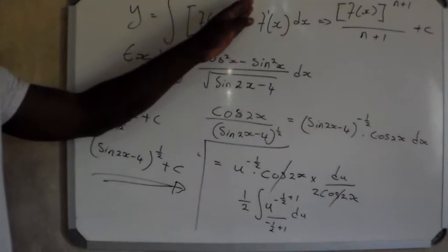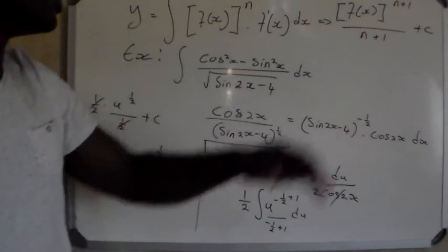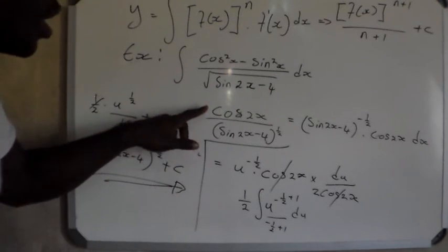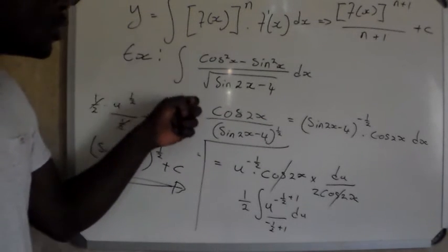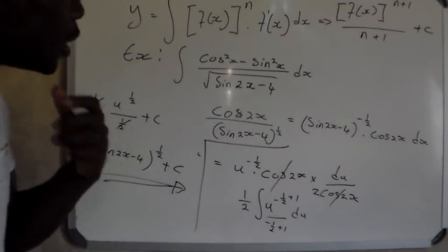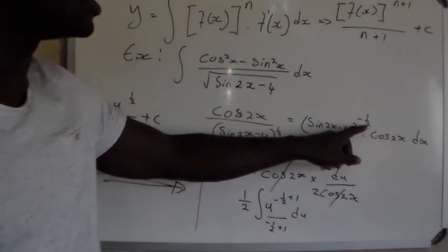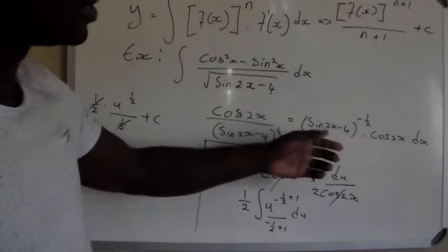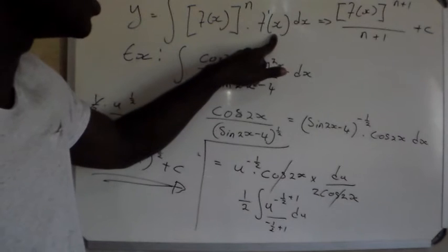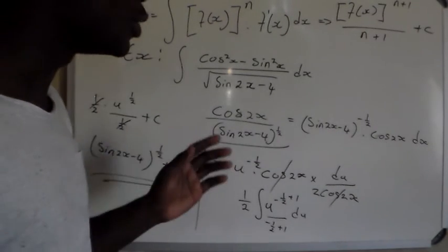To summarize: this was an example of integrating f of x to the power n multiplied by the derivative of f of x. We started by simplifying, using the identity cos squared x minus sin squared x equals cos 2x. We removed the square root sign by writing the power as one-half, and rewrote the denominator with a negative power, giving negative one-half. We recognized that cos 2x is the derivative of sine 2x, since the derivative of sine 2x equals 2 cos 2x. That is why we had the factor of one-half outside.